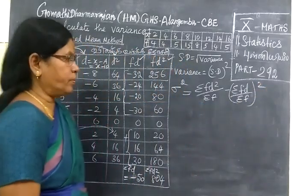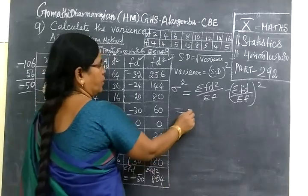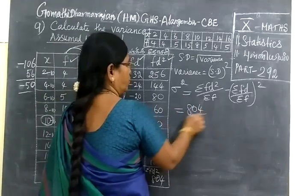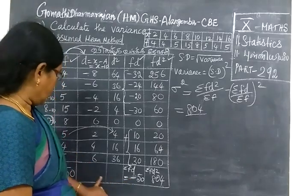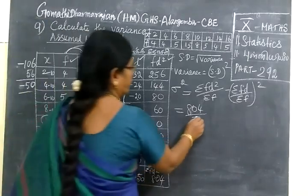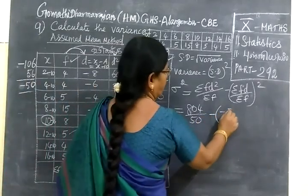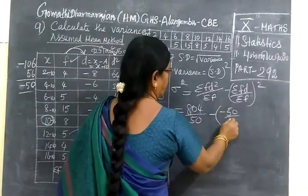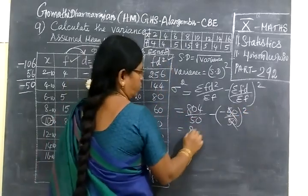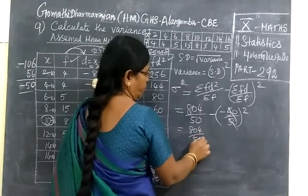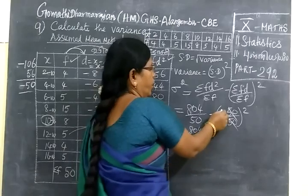Thus, this is equal to sigma FD square 804 by sigma f is 50, minus sigma FD minus 50 by 50 whole square. This cancels. So 804 by 50 minus 1.